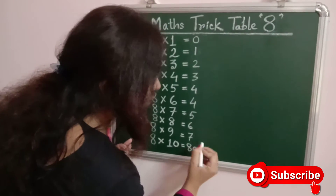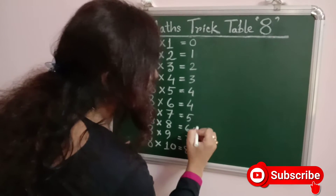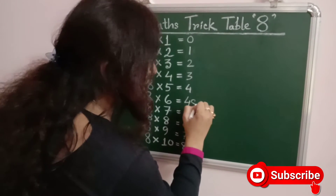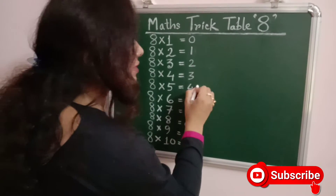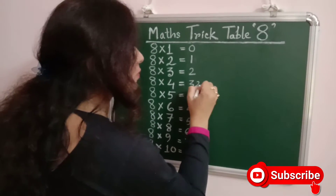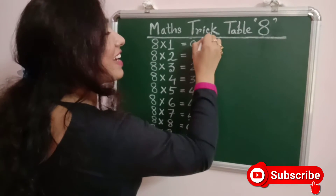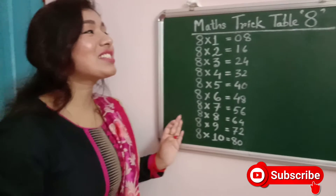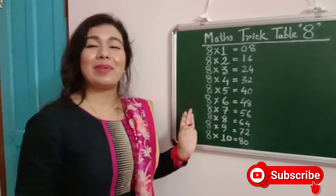Write 0, 2, 4, 6, 8. After that we can again repeat 0, 2, 4, 6, 8. This is the quickest method of table 8.